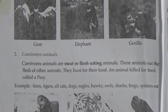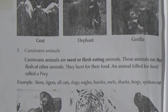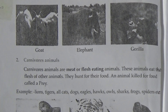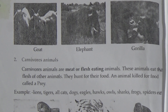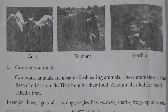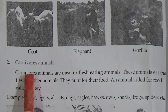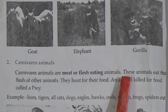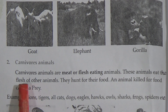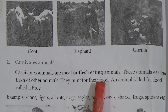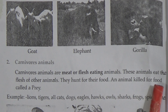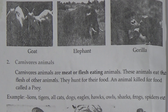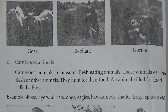In our previous class we discussed different kinds of animals: herbivorous, aquatic, and carnivorous. In today's class we will discuss carnivorous animals. Carnivorous animals are meat or flesh-eating animals. These animals eat the flesh of other animals and hunt for their food. An animal caught for food is called a prey.